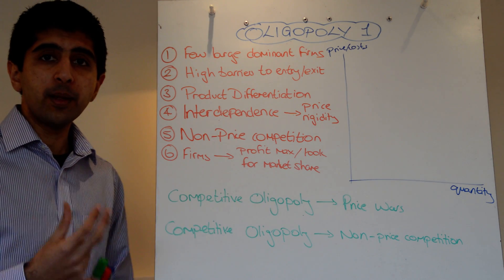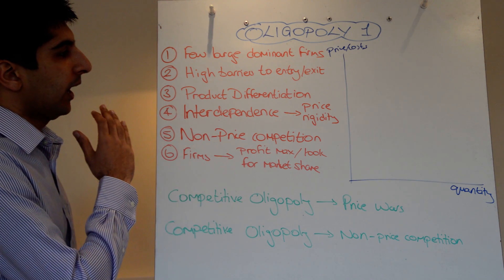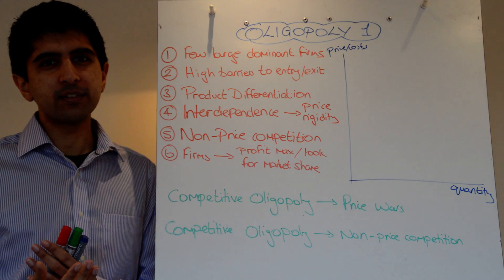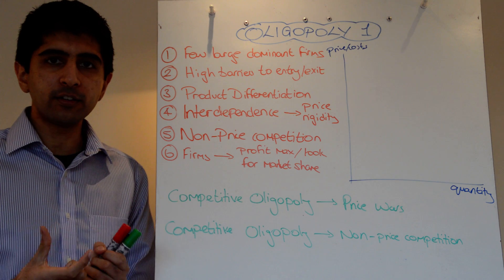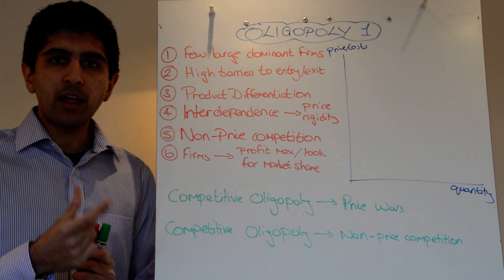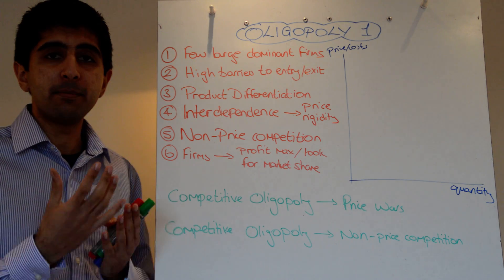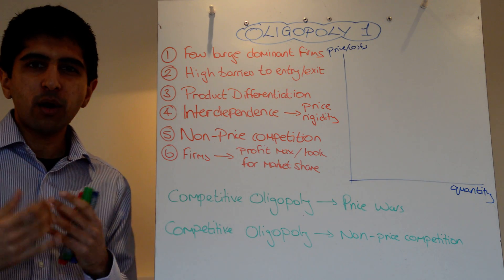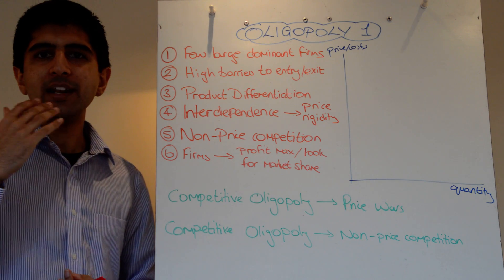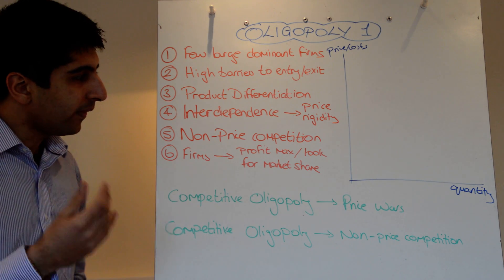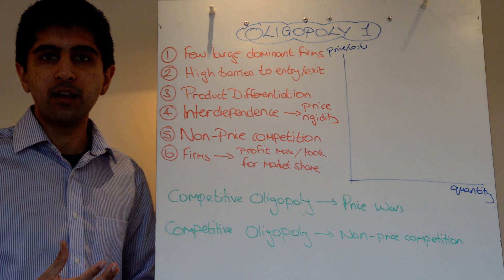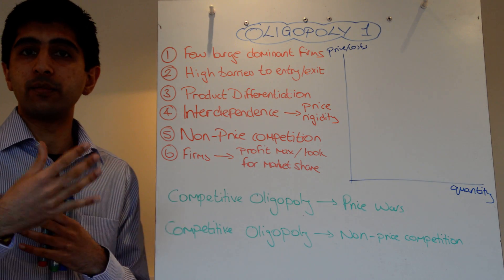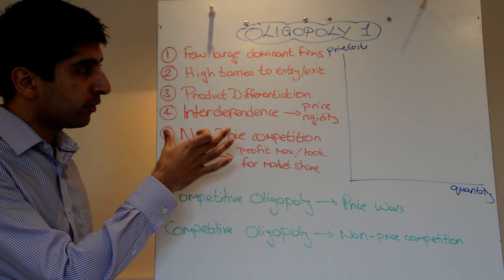There is product differentiation, so firms do have price-making power. However, very important in oligopoly is this notion of interdependence. What that means very simply is that anytime a firm makes a decision, that firm must consider the likely reactions of its rivals before actually making the decision. That's important because there is a lot of uncertainty. These few dominating firms are trying to get ahead of each other and gain as much market share as possible. That's known as interdependence — one decision is based on the reactions of another.